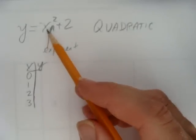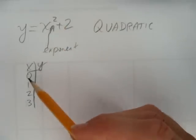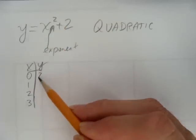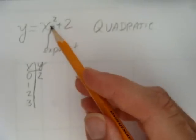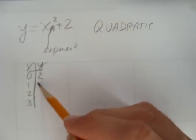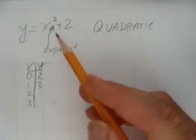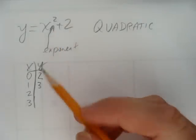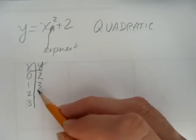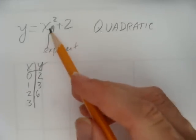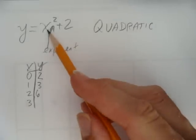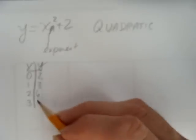When you square 0, 0 times 0, that gives you 0, plus 2 is 2. When you square 1, 1 times 1 is still 1, plus 2 gives you 3. When you square 2, 2 times 2 is 4, plus 2 is 6. And when you square 3, 3 squared is 9, plus 2 is 11.